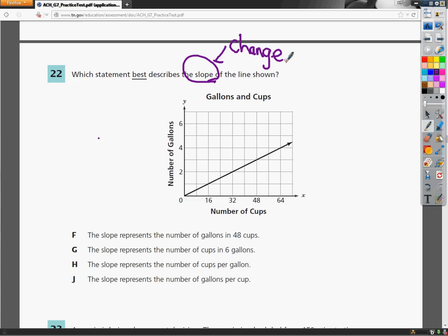Let's look at the axis labels. That'd be the words next to the axis. So on the y-axis, I've got the number of gallons. On the x-axis, I've got the number of cups. So the relationship it's showing me is how many cups are in a gallon or how many gallons in a cup.